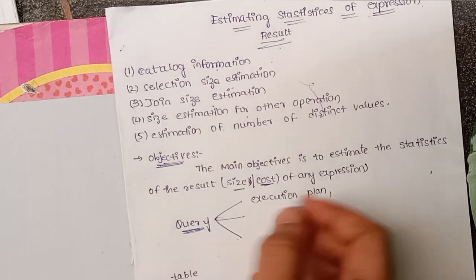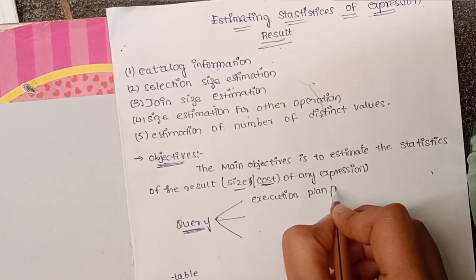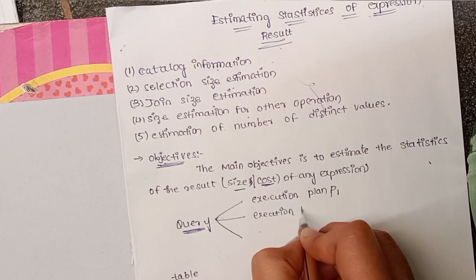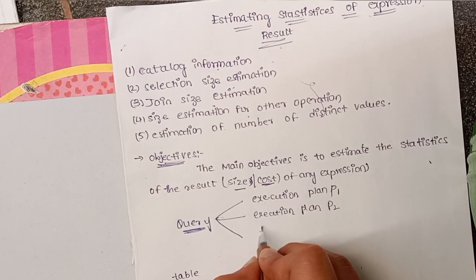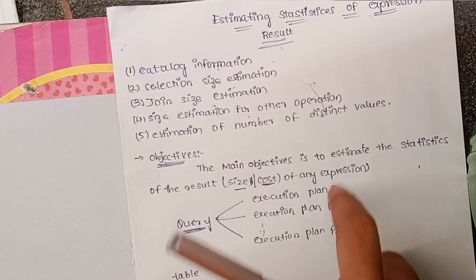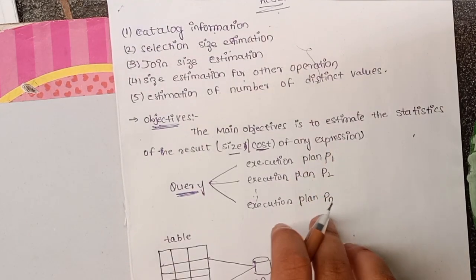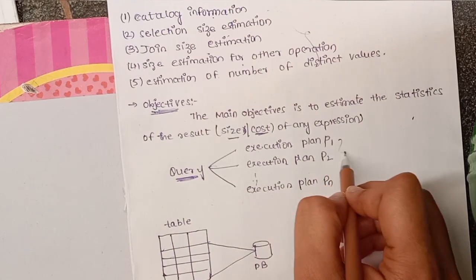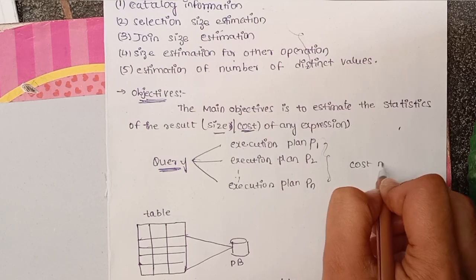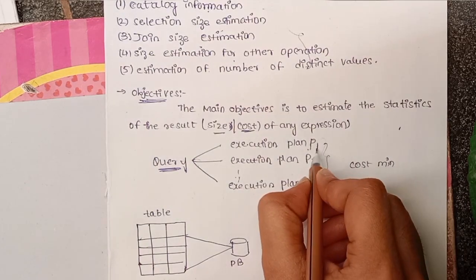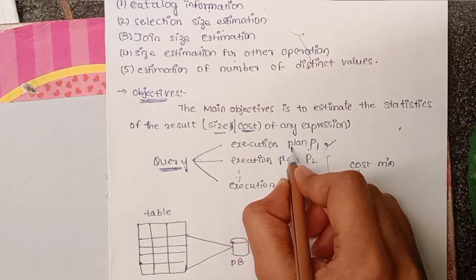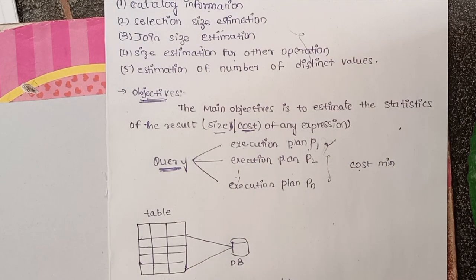Suppose there is one query with several forms of execution plans — execution plan P1, execution plan P2, and so on up to Pn. There are so many possible queries and execution plans, but we select only one based on minimum cost. If execution plan P1 has the minimum cost, we select that execution plan.